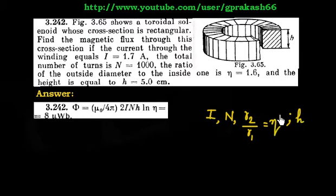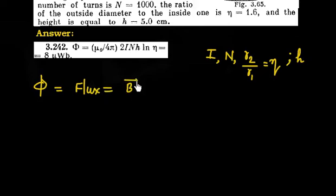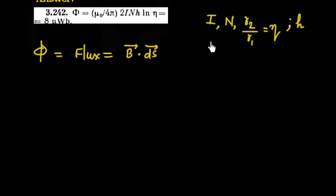My target is to find the flux associated with this toroid. Flux is nothing but B·dS. Now, what is the magnetic field inside the toroid? That is an important question. If you see this toroid from the top, you will see the inner circle and the outer circle.